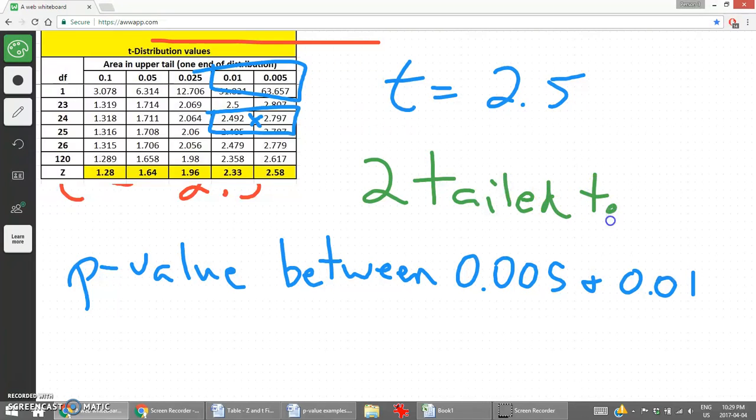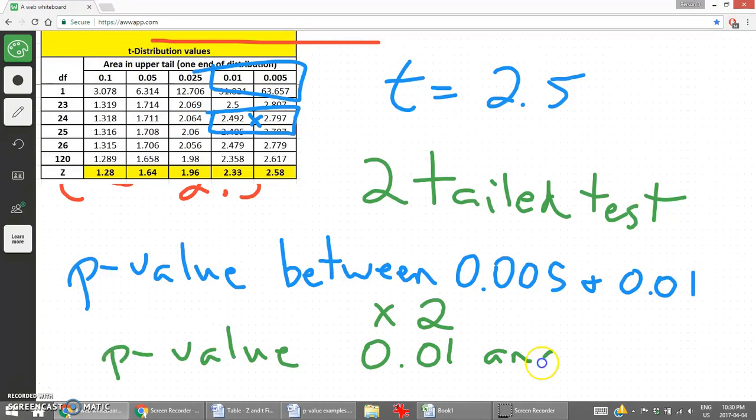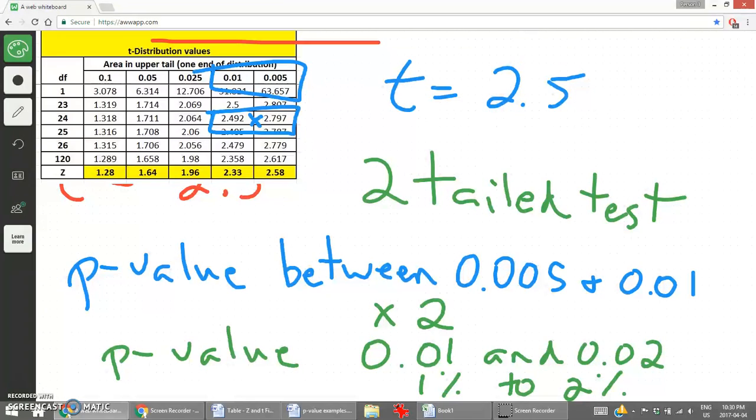We know that it's a two-tail test. The null hypothesis is that the average equals 80,000. Alternate hypothesis is that it does not equal 80,000. So the p-value here, similar to what we did in our first video, is we have to multiply this by 2. So the p-value is going to be between 0.01 and 0.02. Or as a percent, 1% to 2%. And most likely very close to that 2% value. In using Excel, we can find the exact p-value. The exact p-value is 1.96%. So just shy of that 2% value.